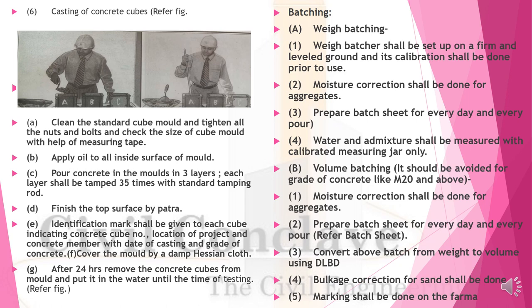Weigh batching: Set up the weighing machine on a firm, level ground; calibration shall be done prior to use. Moisture correction shall be done for aggregates. Prepare a batch sheet for every day and every pour. Water and admixture shall be measured with a calibrated measuring jar only. For volume batching of concrete with aggregate 20mm and above, moisture correction shall be done and batch sheet prepared for every batch.